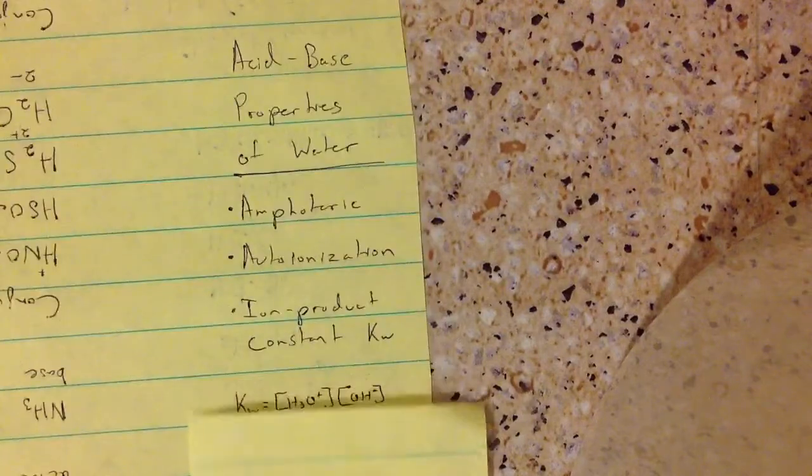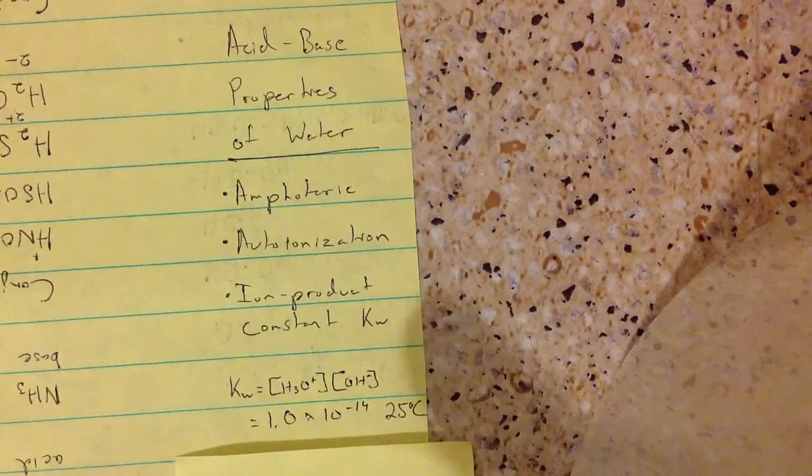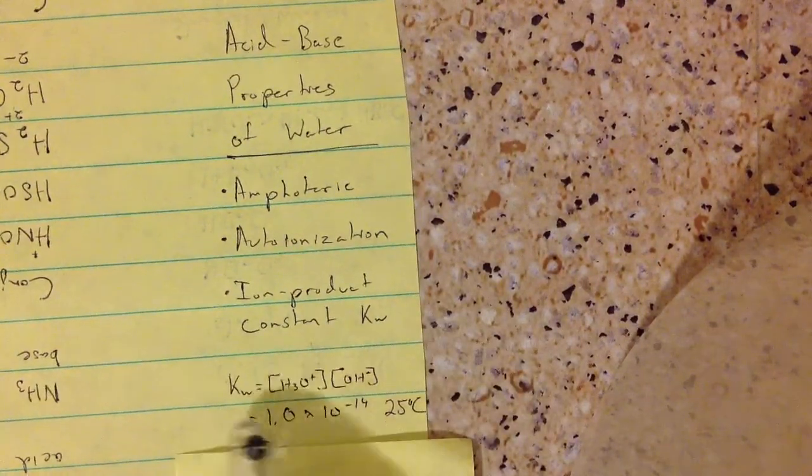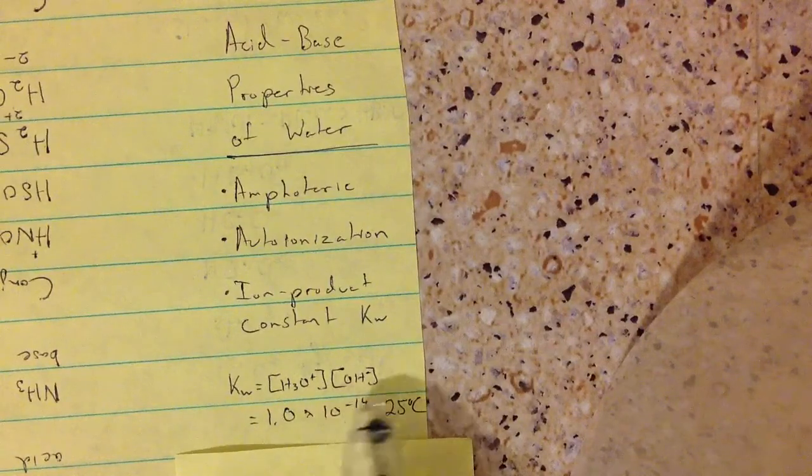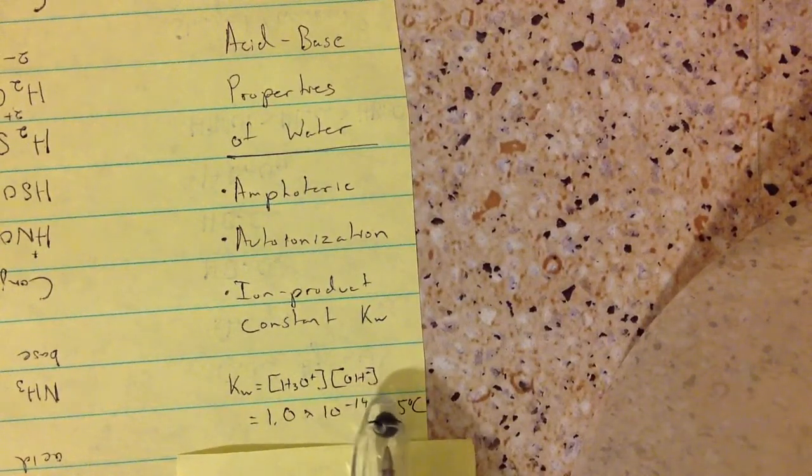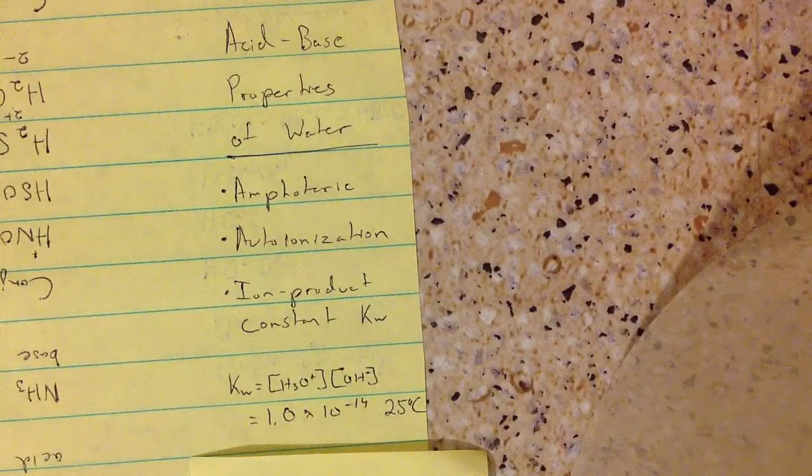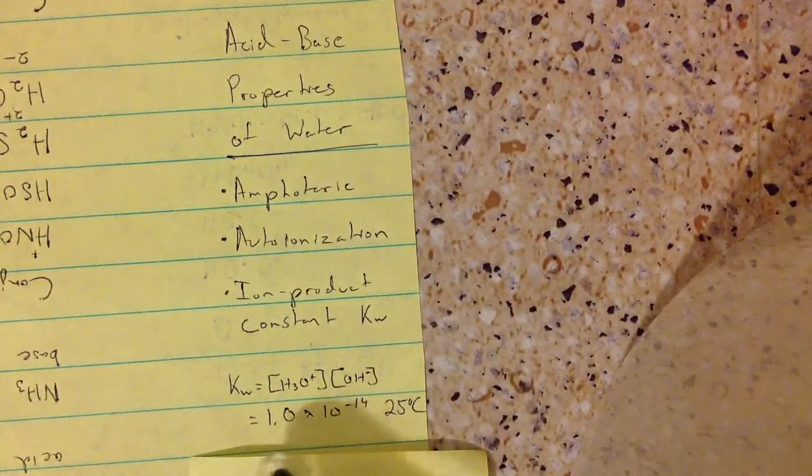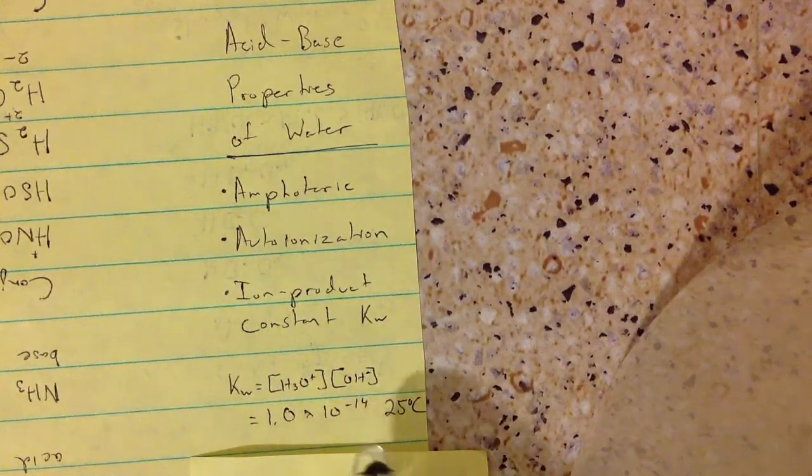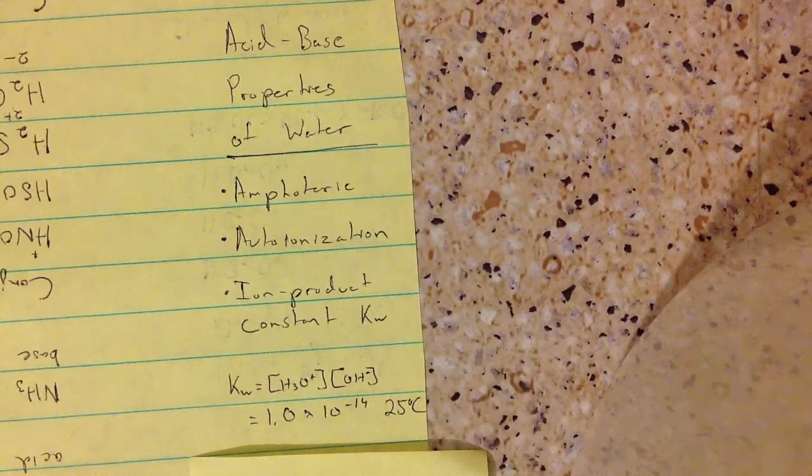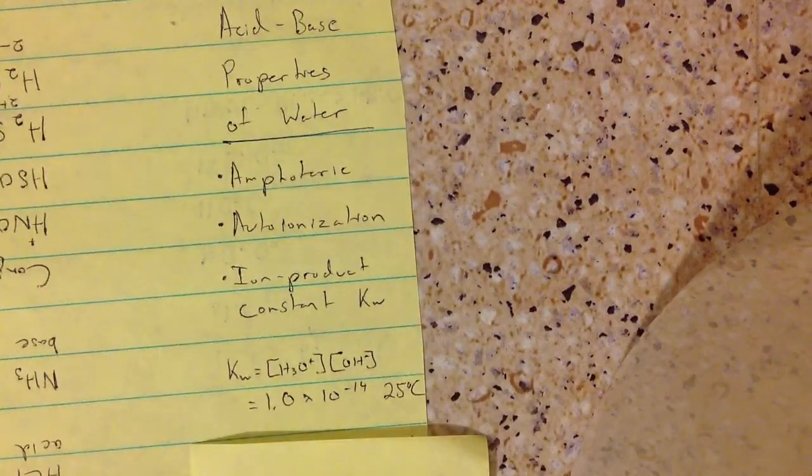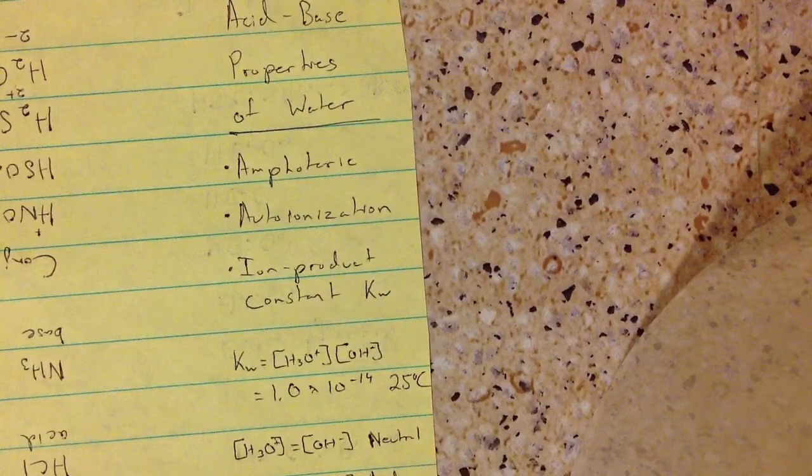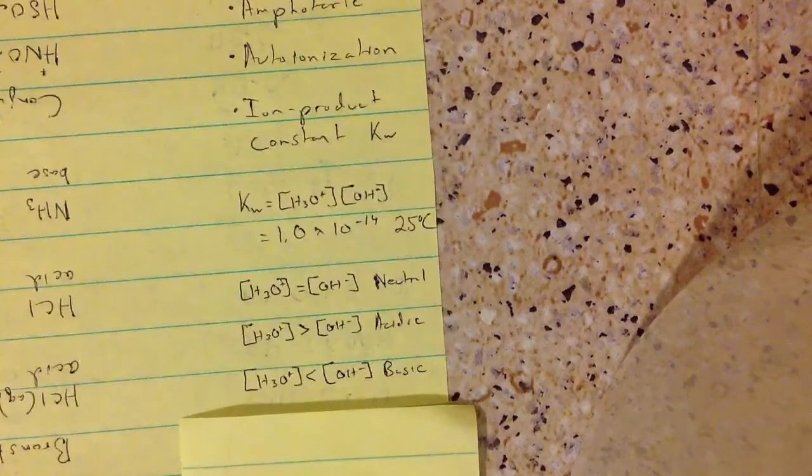So the formula you'll need is the ion product constant equals hydronium multiplied by hydroxide concentrations. And the product of this is always 1.0 times 10 to the negative 14 at 25 degrees Celsius. So in general, these three things you'll need to know.